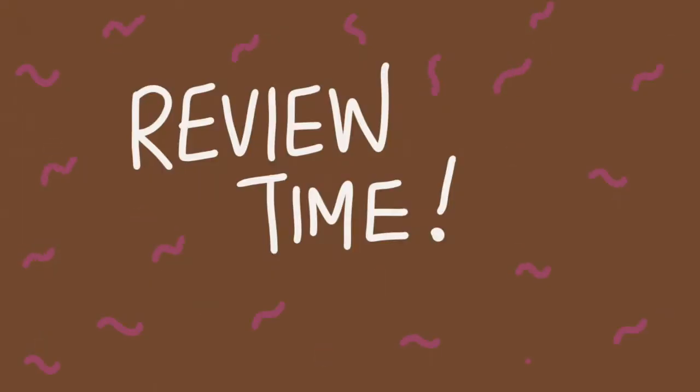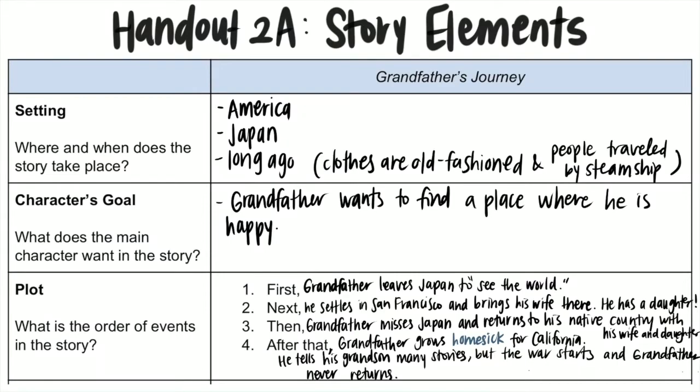Before we get started with today's lesson, it's review time. Here is our handout 2A, Story Elements. This should look familiar because this is part of your classwork from last week. I just wanted us to go over each part so that we're all on the same page about what is happening in Grandfather's Journey. These are story elements that we should remind ourselves of whenever we are reading a fictional text.